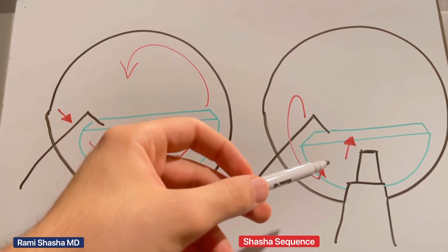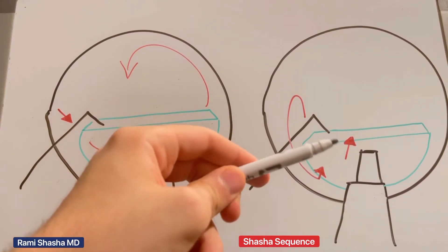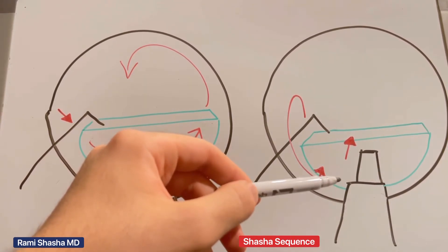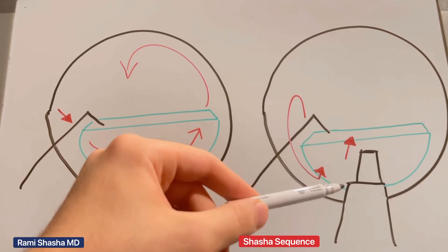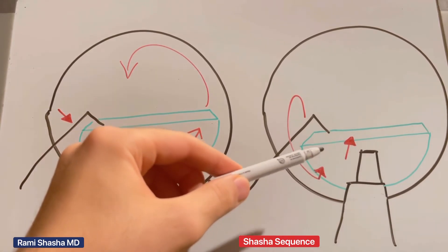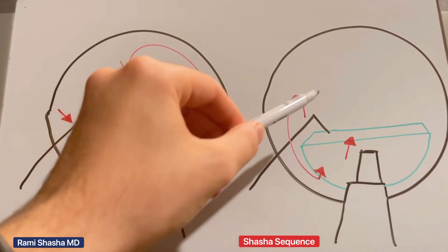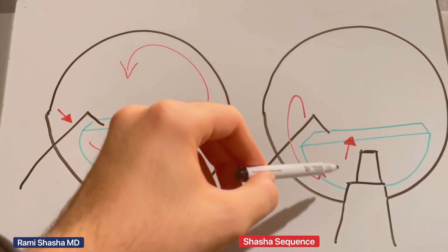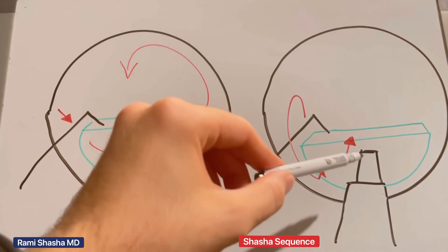Often when there's a non-rotating hemi-nucleus, there are adhesions between the endo-nucleus and the epi-nucleus, or there may be weak zonules in that region. In this case, you're mechanically dissecting and staying on position one.